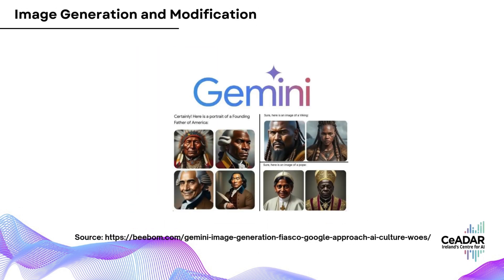Finally, let's touch on some of the creative applications. Beyond understanding and reasoning about existing visuals, some multimodal LLMs have capabilities for image generation and modification. A model could take a text prompt and generate an image matching that description, or modify an existing image based on user instructions, like changing the color of an object in a photo. These creative capabilities are increasingly being used in advertising, content creation, and entertainment — for example, generating visuals for social media campaigns based on text-based themes, or creating entirely new product design concepts from scratch.